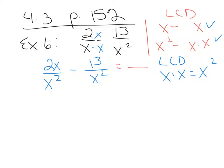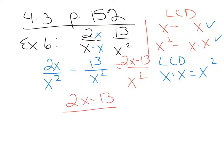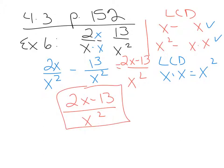So the denominator is going to be x squared. The numerators get subtracted. These are not like terms, so 2x minus 13 doesn't simplify any further — the answer is 2x minus 13 over x squared. You cannot cancel these x's here because this one is part of a term. You cannot cancel terms; you can only cancel factors. So this is your final answer.